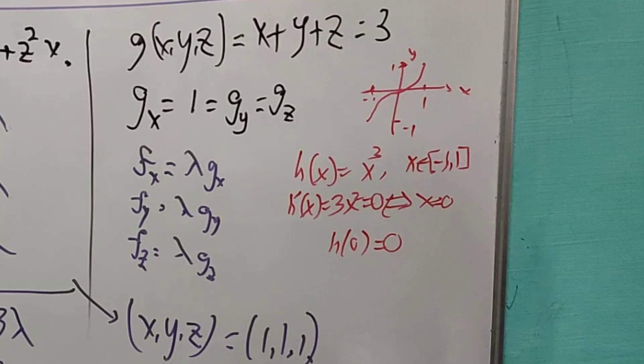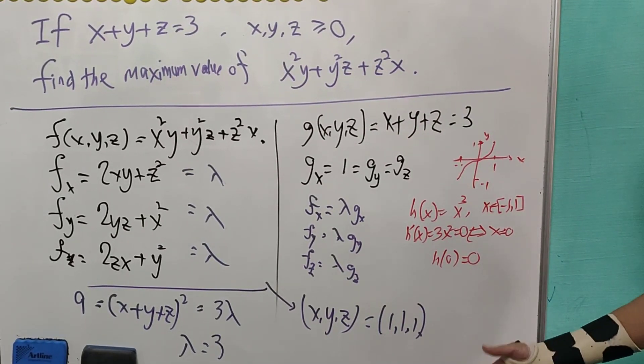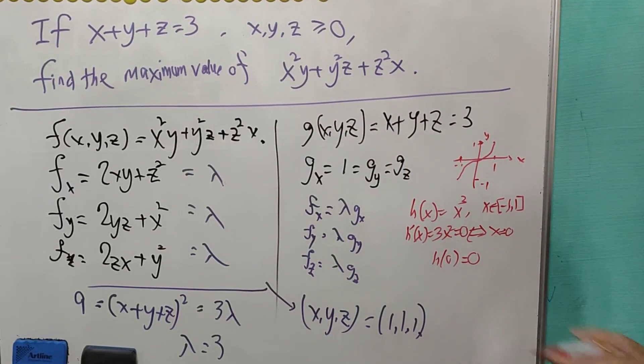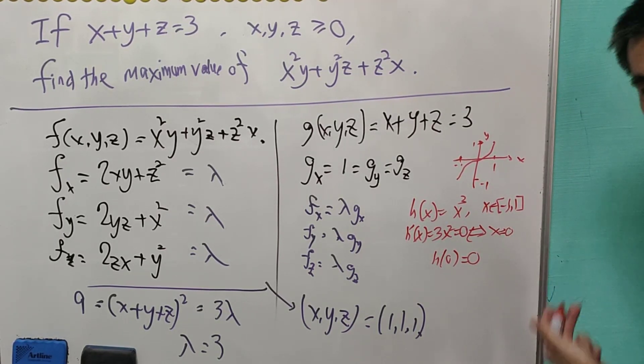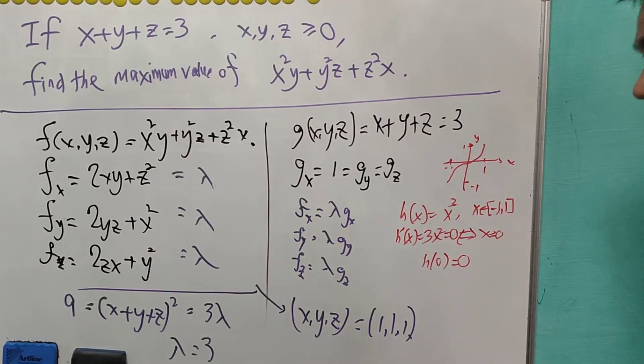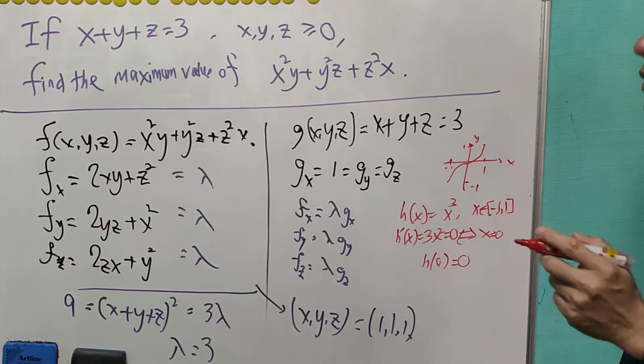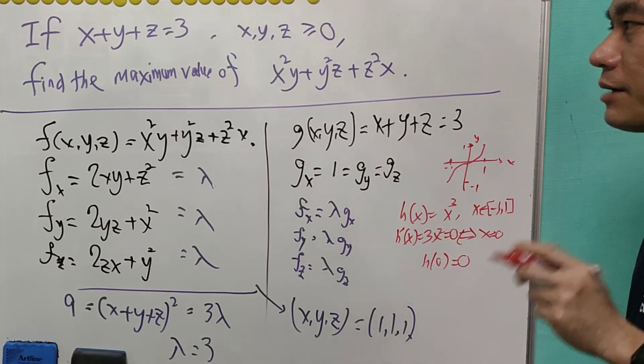So in order to check whether this is a maximum value or minimum value for the expression, we also need to check the boundary. So let's say you can check for what happens when z equals to 0 and use the Lagrange multiplier again. And in that case, we actually will have the answer. We are not going to use the Lagrange multiplier again, but we use rearrangement inequality and AM-GM inequality.